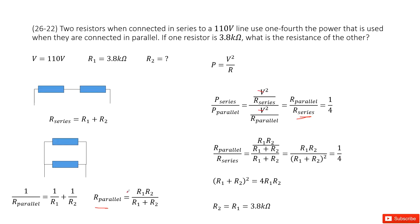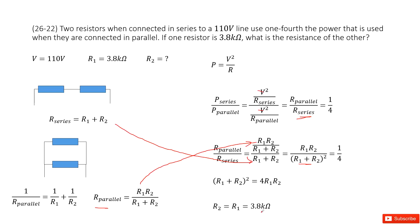We then input R_parallel and R_series into the equation and simplify. After solving, we find R1 equals R2 equals 3.8 kΩ. Thank you.